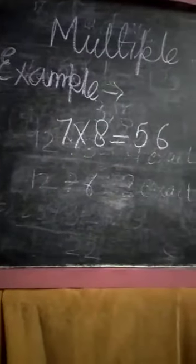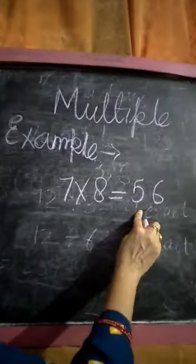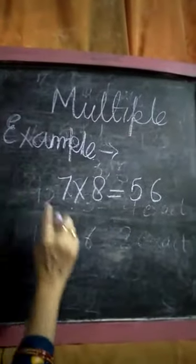7 into 8 equals 56. We can say 56 is the multiple of 7.